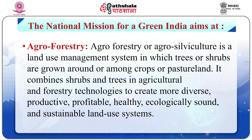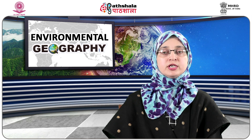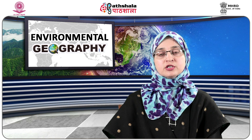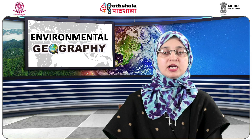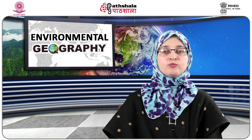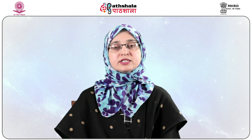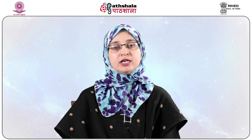Number two: Agroforestry. Agroforestry or agro-silviculture is a land use management system in which trees or shrubs are grown around or among crops or pasture land. It combines shrubs and trees in agricultural and forestry technologies to create more diverse, productive, profitable, healthy, ecologically sound and sustainable land use systems. In other words, agroforestry is the management and integration of trees, crops and livestock on the same plot of land and can be an integral component of productive agriculture. It may include existing native forests and forests established by landholders. It is a flexible concept involving both small and large-sized land holdings.